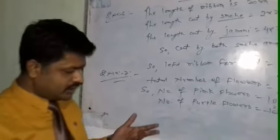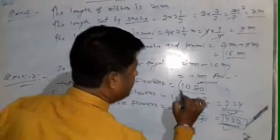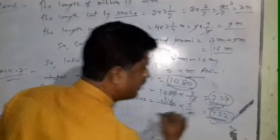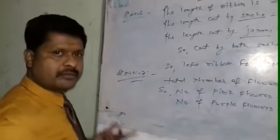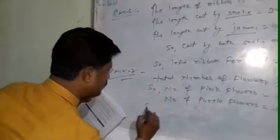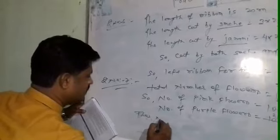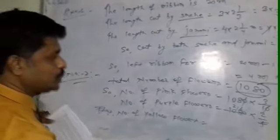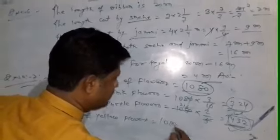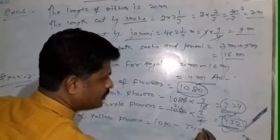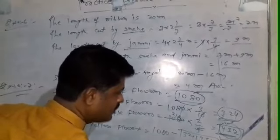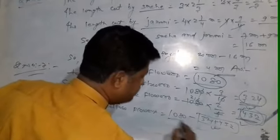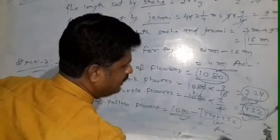The rest are yellow color. In 1080: 324 are pink, 432 are purple, and the rest are yellow. Number of yellow flowers equals 1080 minus (324 plus 432). Add 324 and 432, then subtract from 1080 to get your answer.